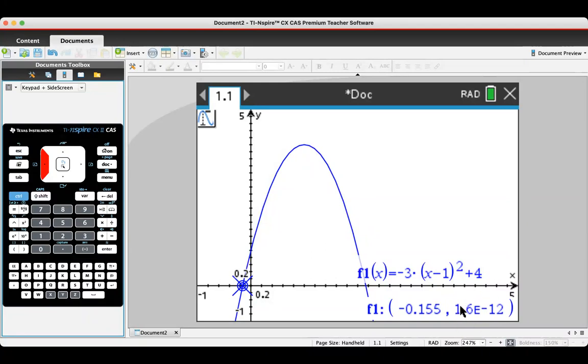Remember that this bit here simply means basically 0. It means move the decimal—the negative 12 means move the decimal point back 12 times, just doesn't give an accurate 0, that's all. And I can scroll all the way down to the other side and I can snap to the other x-intercept which is 2.15.